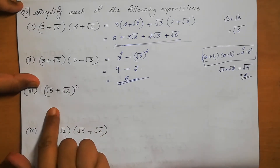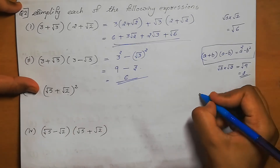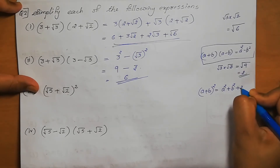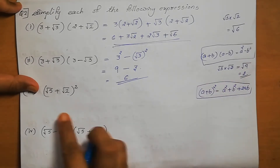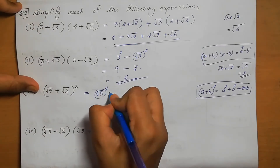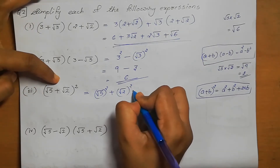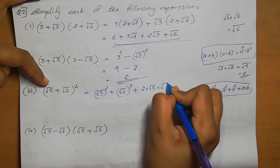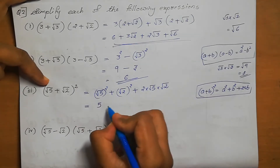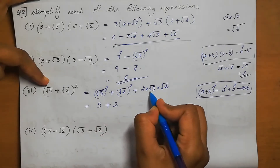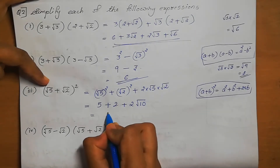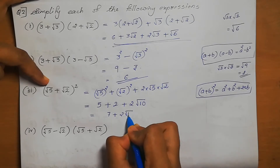Third one: (root 5 + root 2) whole squared. This uses the identity (a + b)² = a² + b² + 2ab, where a equals root 5 and b equals root 2. So we get root 5 squared plus root 2 squared plus 2 into root 5 into root 2, which is 5 plus 2 plus 2 root 10. Adding 5 and 2 gives 7 plus 2 root 10.